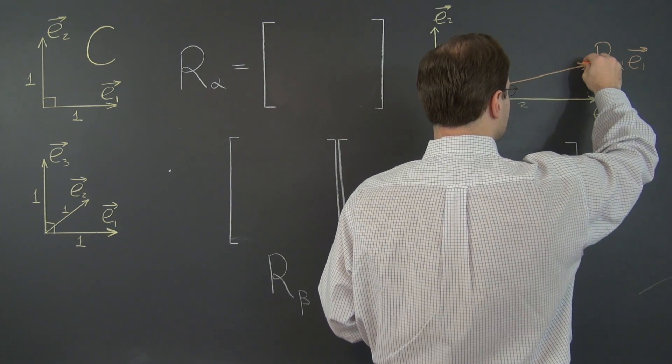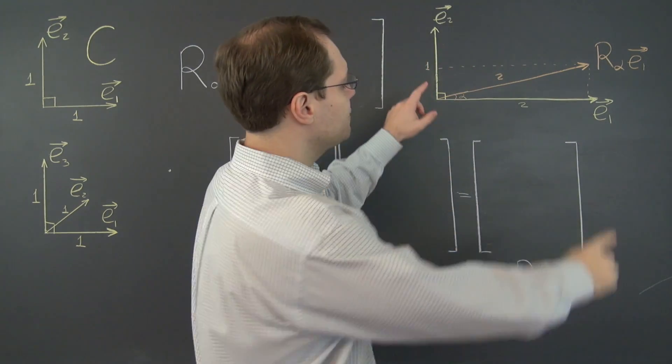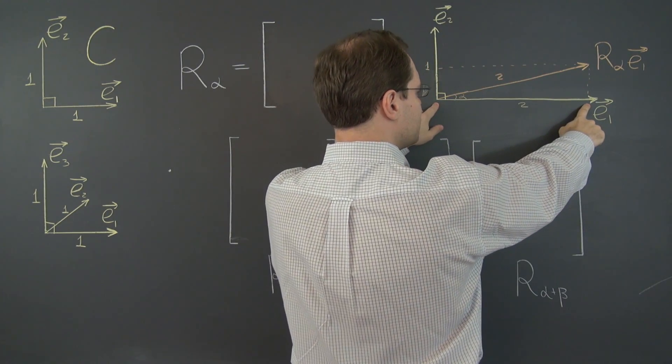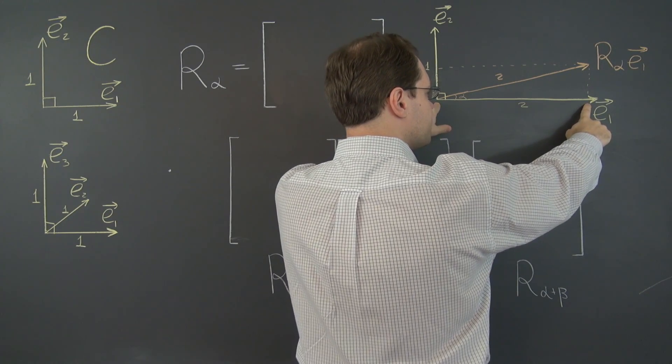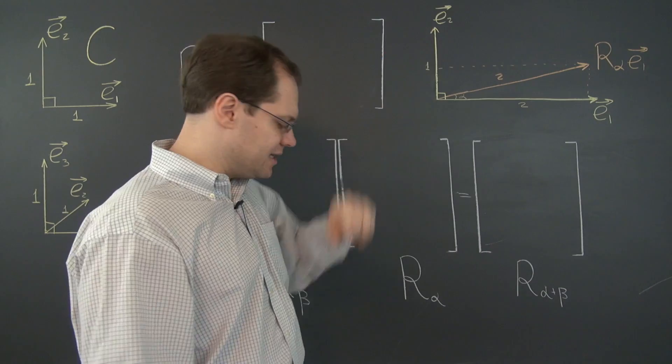So now we have to decompose it with respect to the basis. Familiar procedure. Okay. And we have to realize that its component with respect to E1 is still cosine alpha.